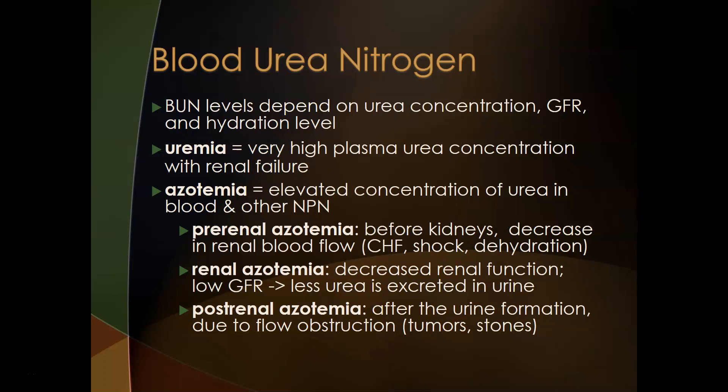Uremia is an indication of very high plasma urea concentration, usually seen with renal failure — BUN levels of 60, 70, 80, 100, or even above 200 (four to five times the upper limit of normal). Azotemia is an elevated concentration of urea and other non-protein nitrogenous compounds in the blood. When both BUN and creatinine are elevated, it is referred to as azotemia; uremia refers to a very severe elevation.